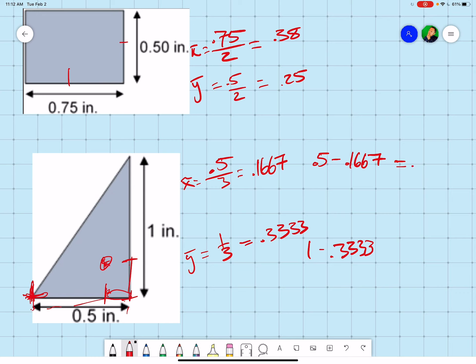And the 1 minus 0.333 is going to be 0.667.